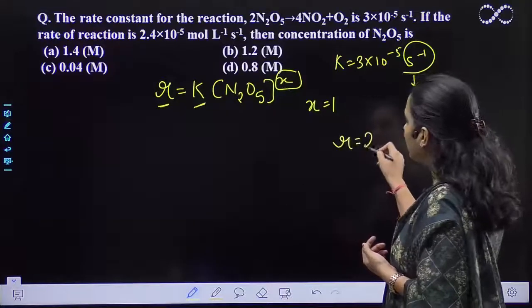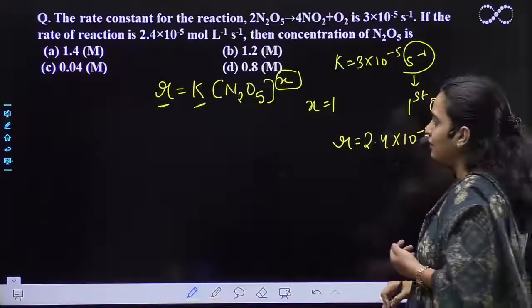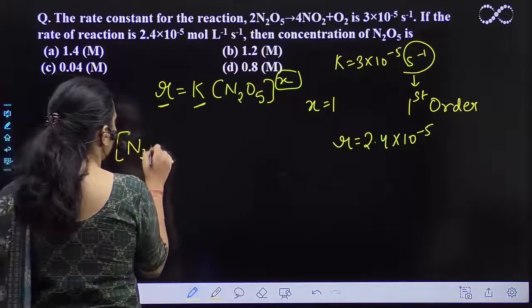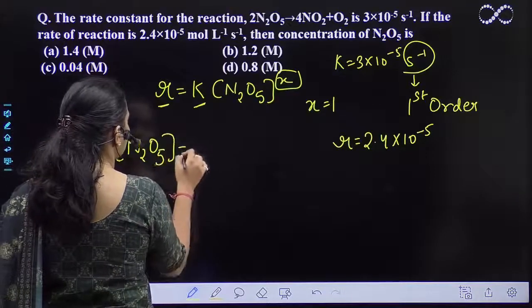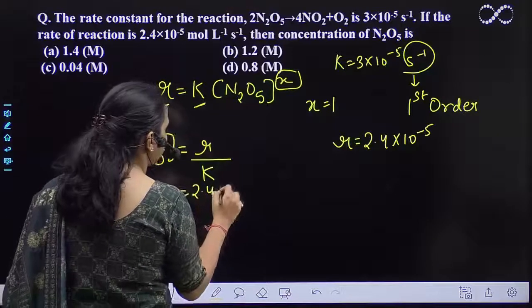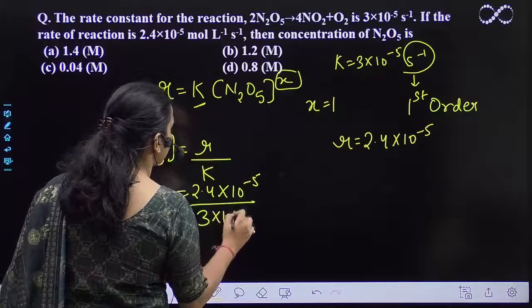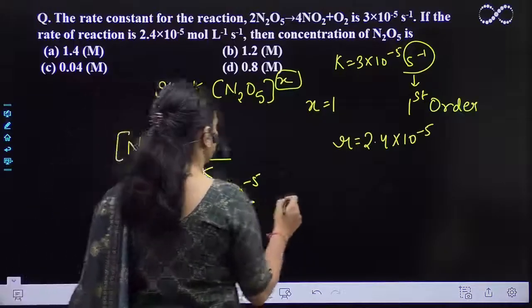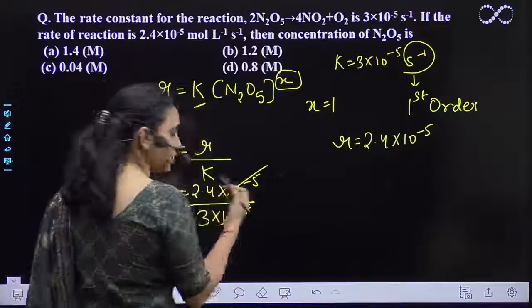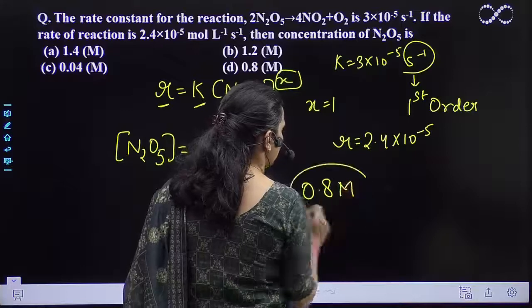The value of R that is provided is 2.4×10^-5. Now let's just calculate N2O5 = R divided by K. It will be 2.4×10^-5 divided by 3×10^-5. These will cancel out and 3 into 8 is 24, so this is 0.8 molar.